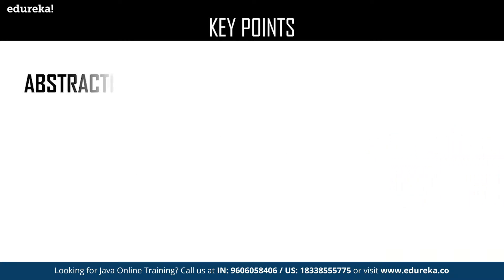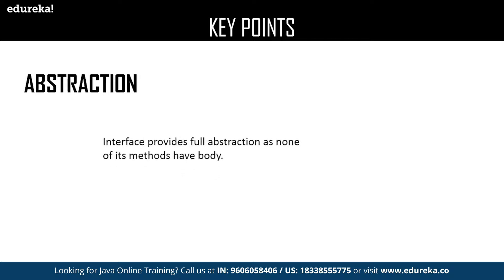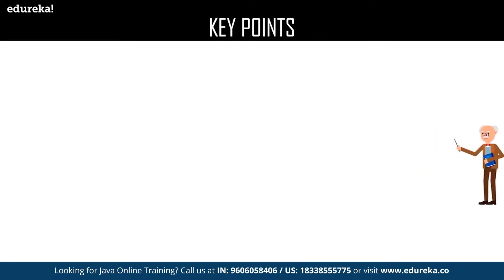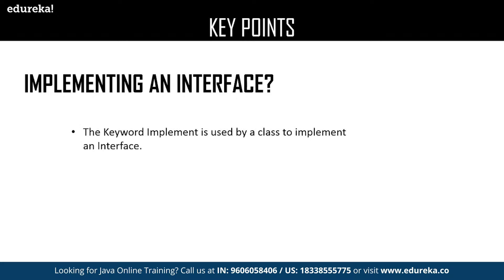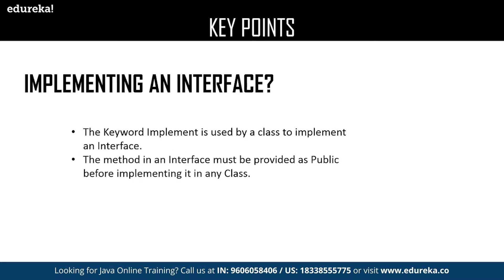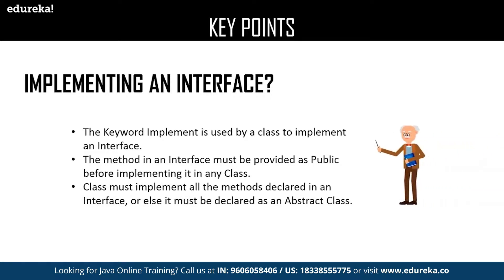The next key point is abstraction. The major advantage of interface is abstraction, because none of the methods declared in an interface have a body. The next key point is implementing an interface — the keyword implement is used in a class to implement the methods of an interface. The method in an interface must be provided with an access modifier as public by default. The methods declared in an interface are also considered as public. A class must implement all the methods declared in an interface, or else it must be declared as an abstract class.